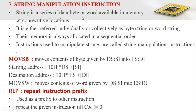A string is a series of data bytes or words available in memory at consecutive locations. It is either referred to individually or collectively as a byte string or word string. Their memory is always allocated in sequential order. Instructions used to manipulate strings are called string manipulation instructions.